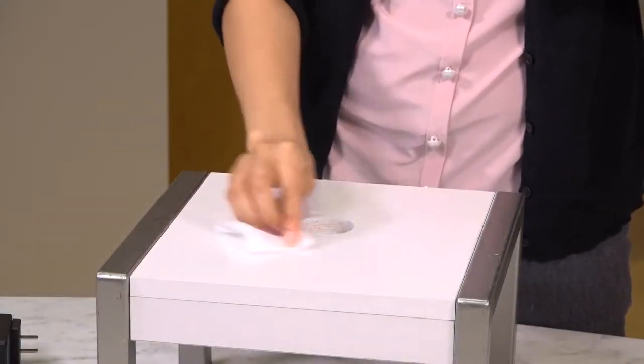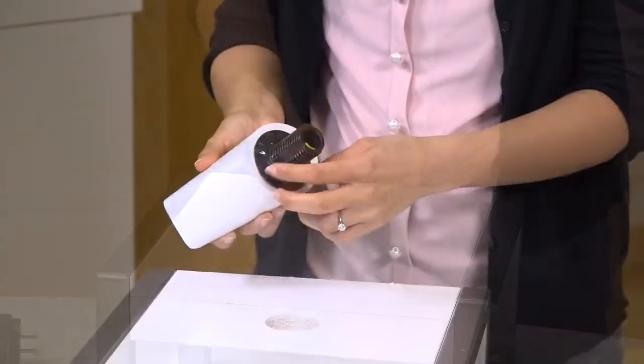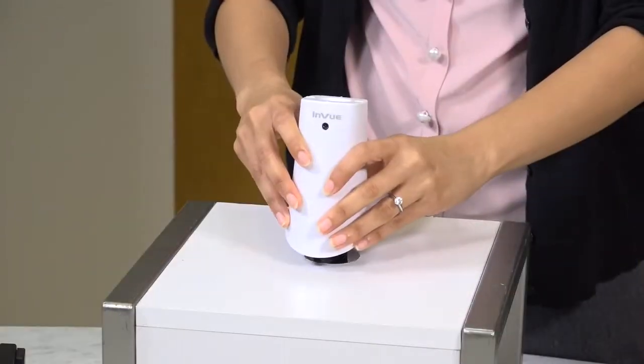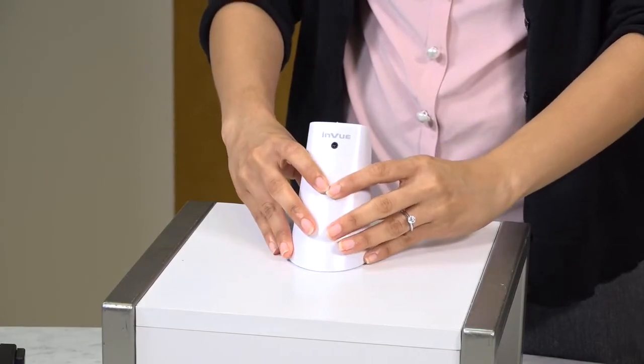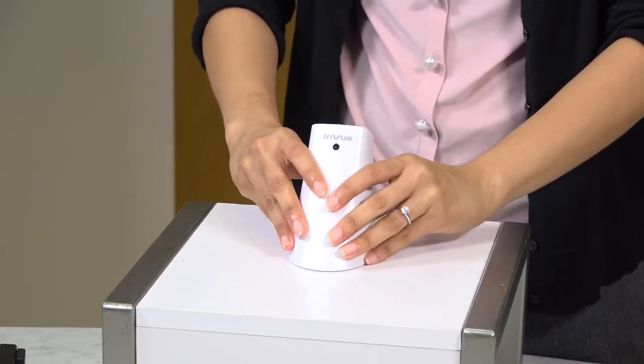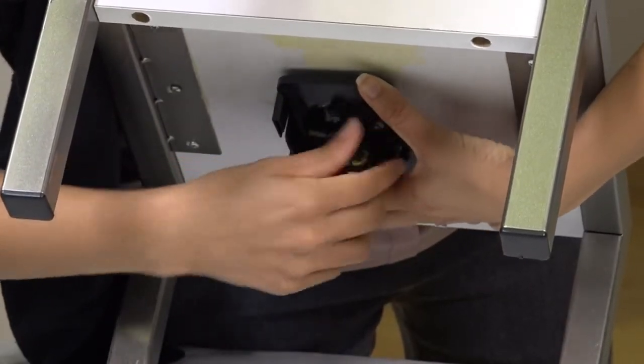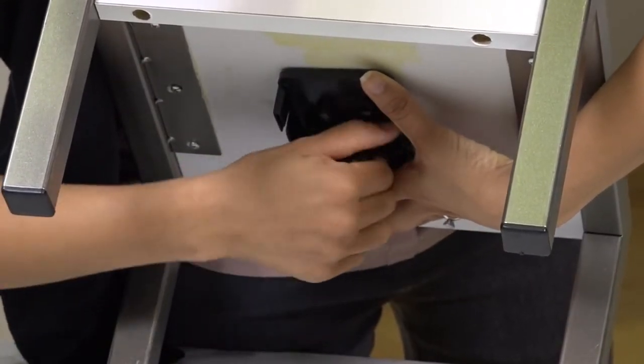Wipe the counter with an alcohol pad and let it dry completely. Remove the clear film off the stand adhesive and slide it through your drilled hole.